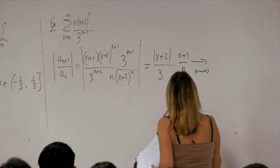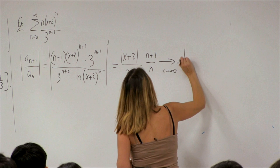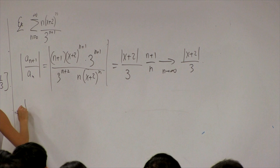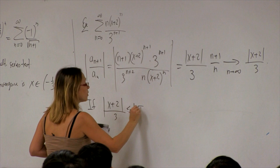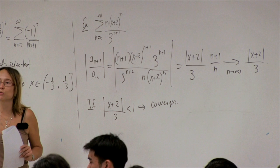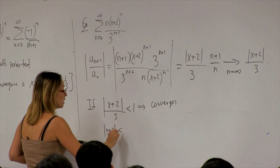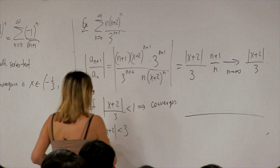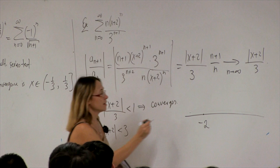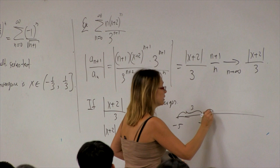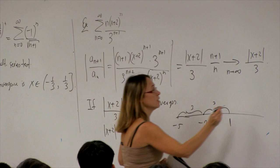The limit as n goes to infinity: (n+1)/n goes to 1, so the limit is |x+2|/3. If |x+2|/3 < 1, the series converges. Multiplying by 3: |x+2| < 3. Drawing this: the center is −2, so we go from −5 to 1. The radius of convergence is 3.